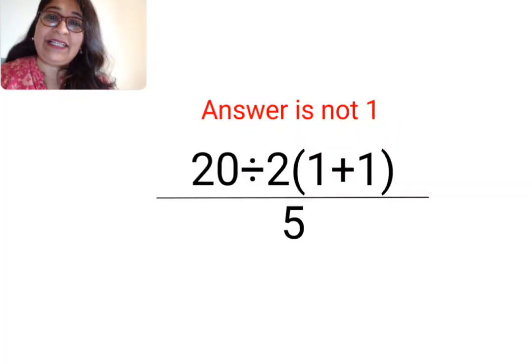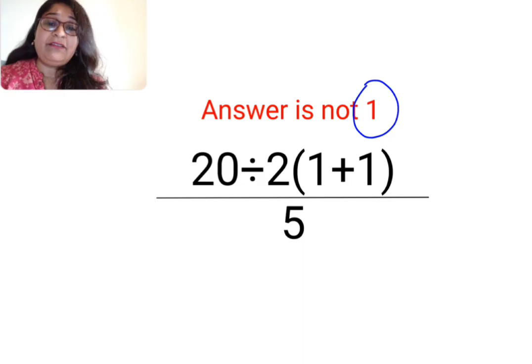Welcome everyone. So today we are going to understand why the answer for this one is not supposed to be 1. We have 20 divided by 2 multiplied by 1 plus 1 in a bracket. And now this entire thing is divided by 5.